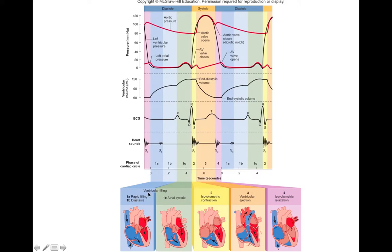We're going to start with this dark blue section right here. In this area we've just finished one cardiac cycle. The ventricles have already ejected all of their blood, they are relaxed, and at this point your AV valves, or your atrioventricular valves, are open. All this time, while the ventricles were contracting, the atria were continuing to fill with blood.